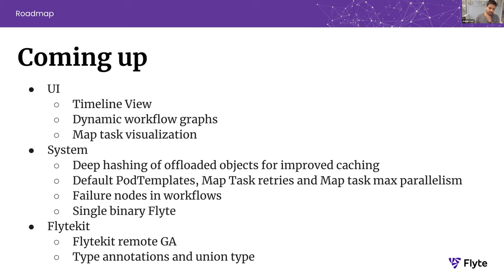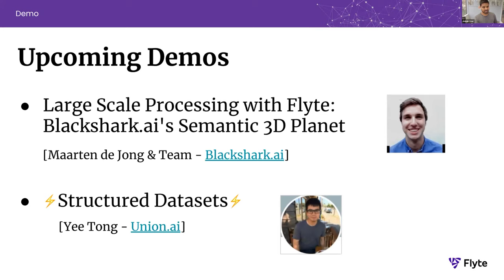This might come in — we're not 100% sure — but failure nodes in workflow. Every workflow can have a try-catch semantic, and you can say in case of failures do X, Y, Z, and it can be an entire workflow. Also a very futuristic helpful thing for folks getting started with Flight: all of the Flight backend in one single binary so you can get started very quickly. FlightKit Remote is going to GA — there are a couple more small things to be fixed and we're working on it this month. And then type annotations and union types, which we've discussed in the past.